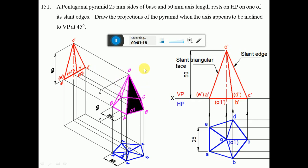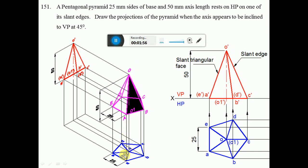This is the initial position of the pentagonal pyramid. When you look from the top view, A, B, C, D, E is the pentagonal surface and O apex is at the center point of the pentagon. A, B, C, D, E is near to the observer, so it is visible. O is near to the observer and visible, while O1 is away from the observer and becomes invisible.